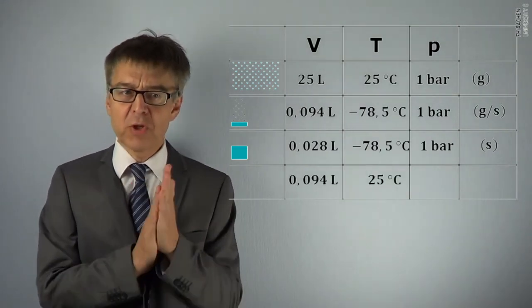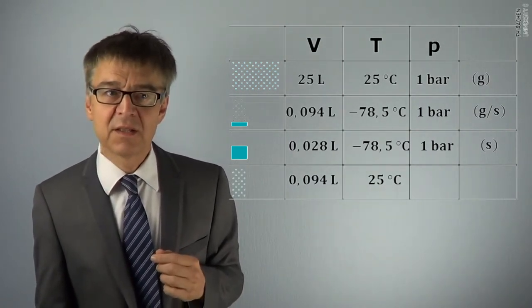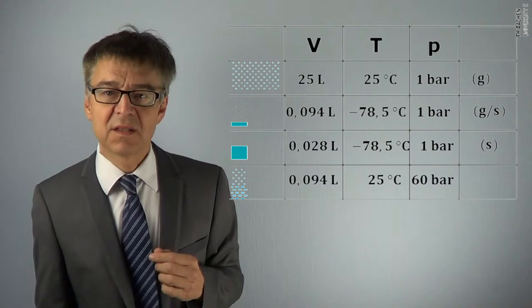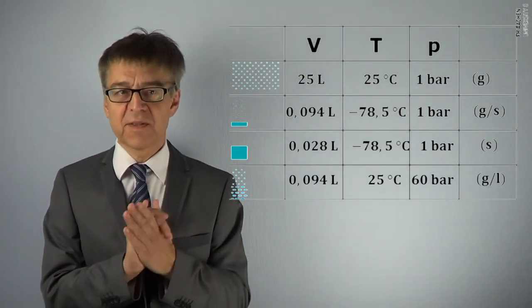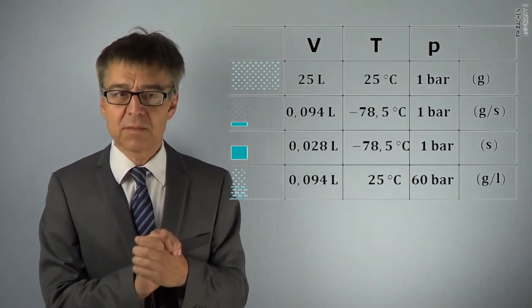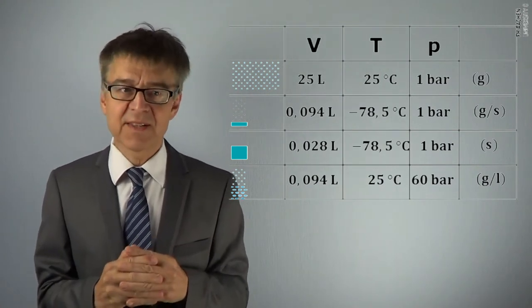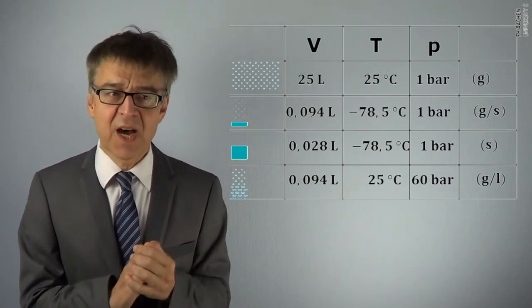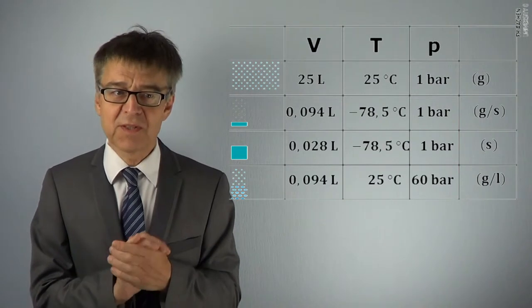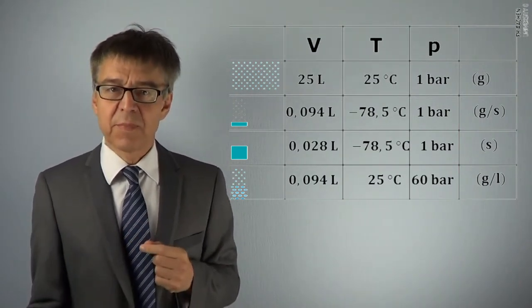If we do so, a portion of carbon dioxide will liquefy. We get a two-phase system and the pressure will adjust to 60 bars. These are three more states of carbon dioxide at considerably higher pressures and lower temperatures than the gaseous states we have discussed before.